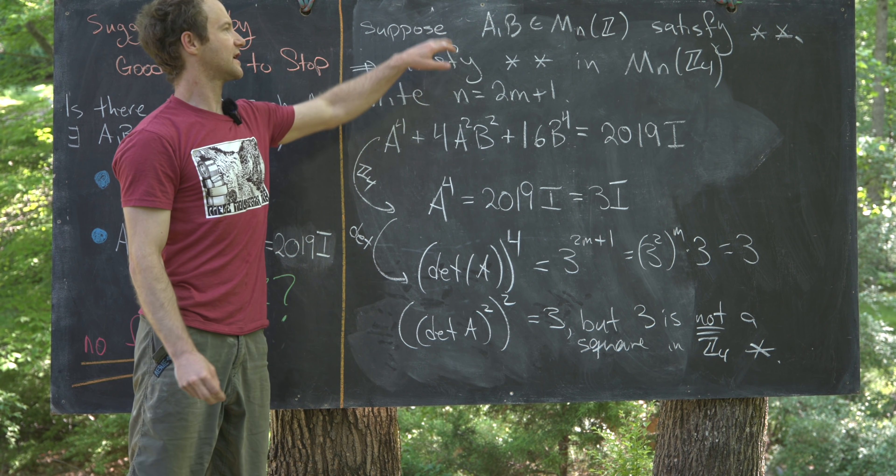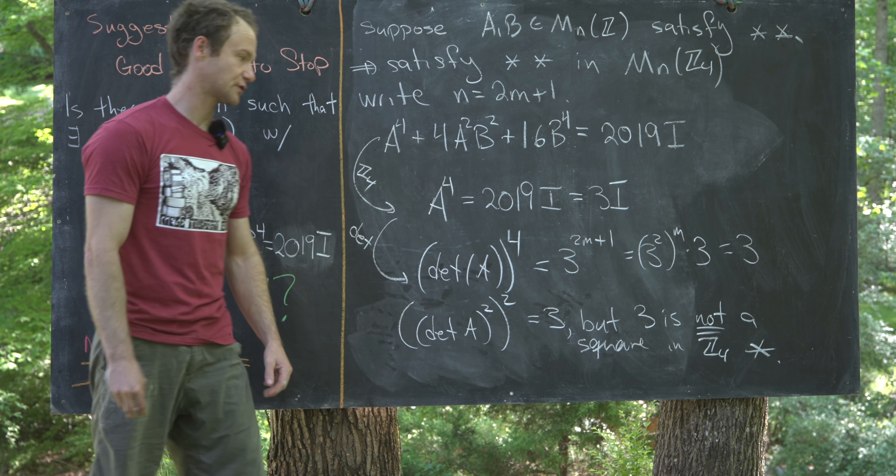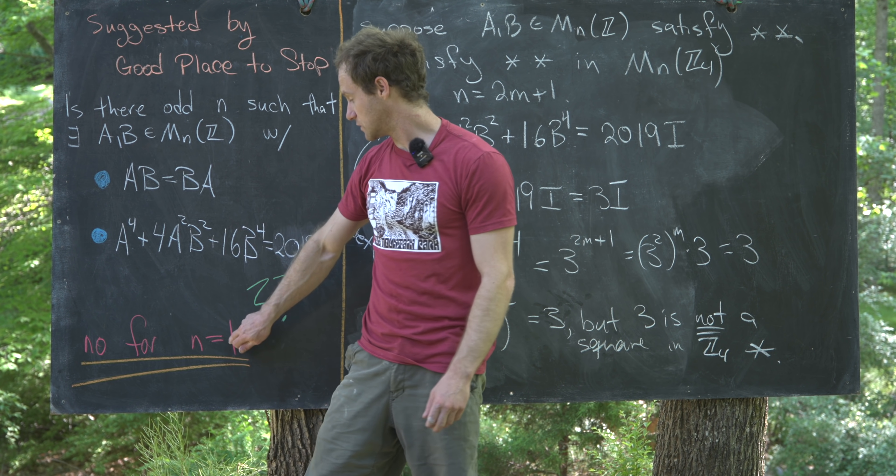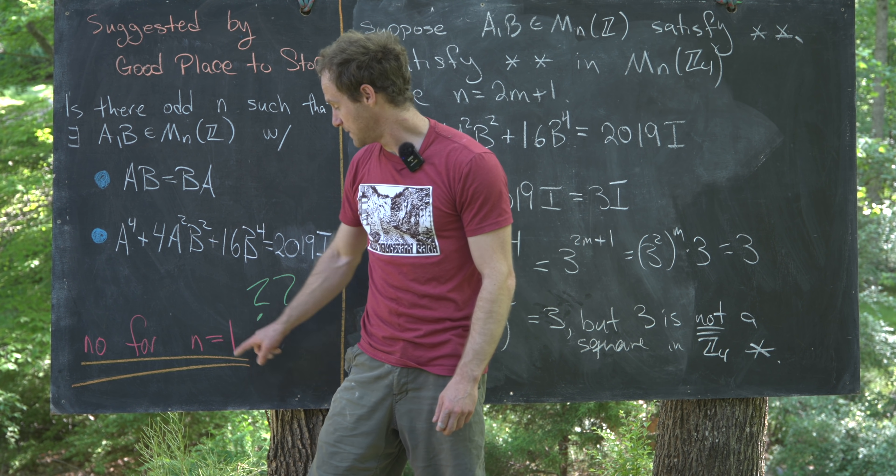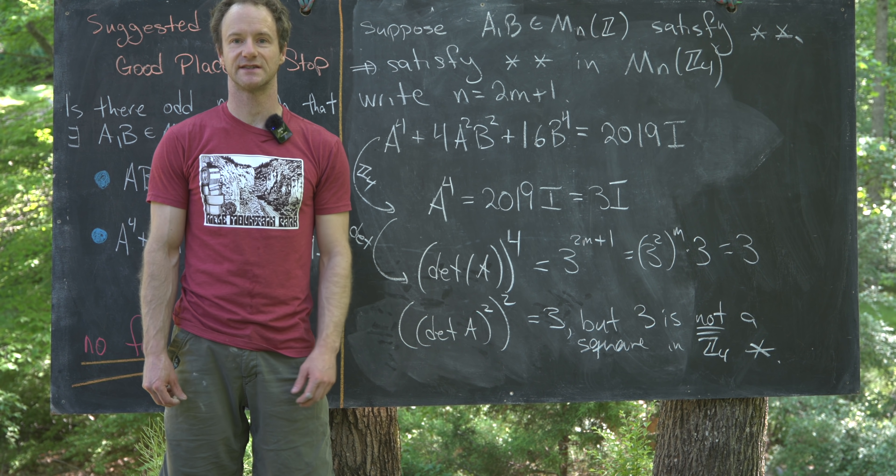So, let's see. We started up here supposing that we had a solution. That gave us some sort of contradiction, so that means we have no solution. So, not only is there no solution for n equals 1, there is no solution for all odd n, and that's a good place to stop.